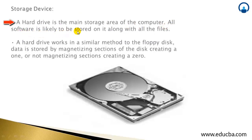All software is likely to be stored on the hard drive along with all the files. Software doesn't mean only C++, Java, or VB.NET — software also includes the operating system (OS) and application software like Microsoft Office. Everything is stored on the hard disk. If the hard disk is gone, everything goes — your old data will also be lost. Hard disk is a very important device and is also called a magnetic disk.